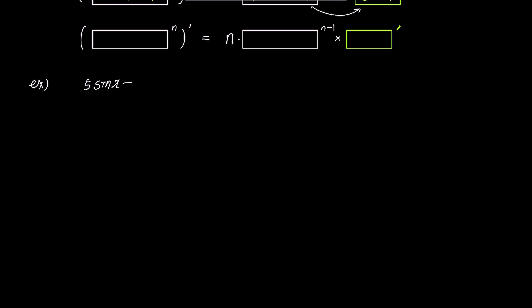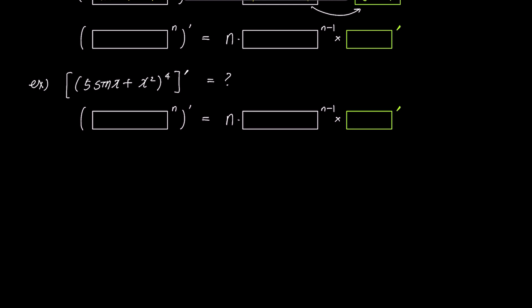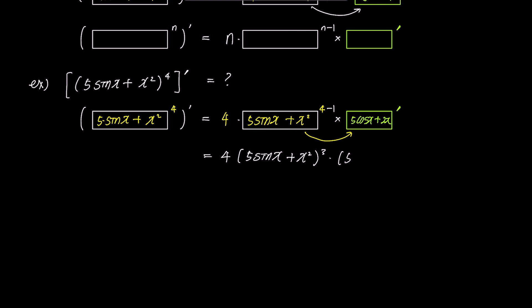Here we have (5 sin x + x²)⁴, and we want to find its derivative. Using the box rule formula, we place 5 sin x + x² inside the box and set n to 4. For the green box prime, we put the derivative of the box: 5 cos x + 2x. Bringing it all together, we get 4(5 sin x + x²)³ times (5 cos x + 2x) as the answer, found in just two lines.